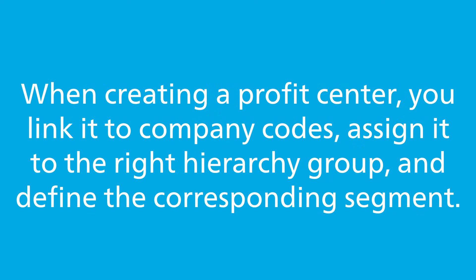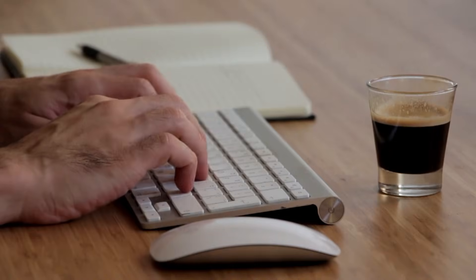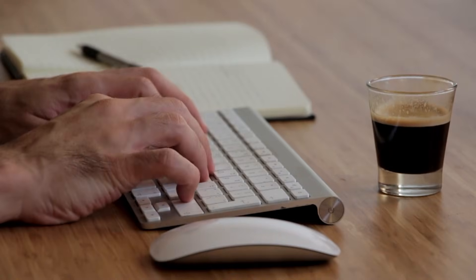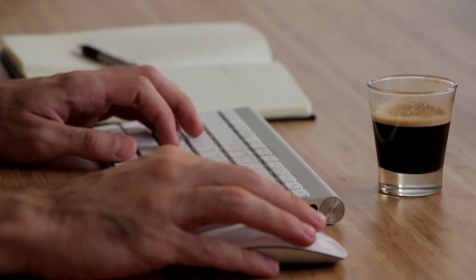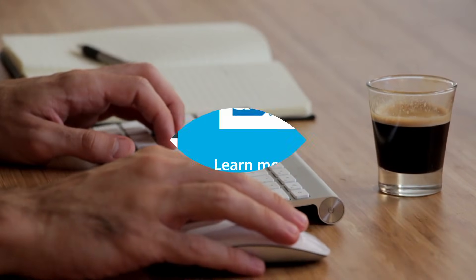When creating a profit center, you link it to company codes, assign it to the right hierarchy group, and define the corresponding segment. Once it's activated, you're ready to use it in postings across your SAP S/4HANA system.